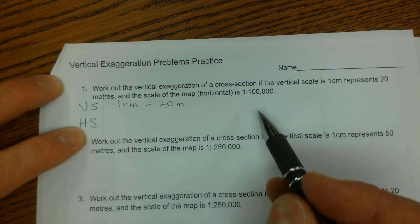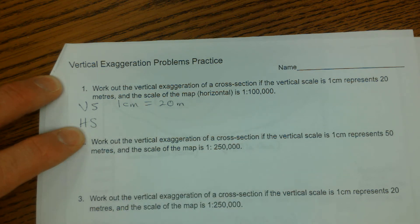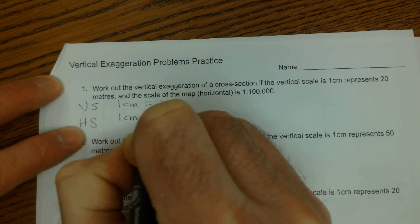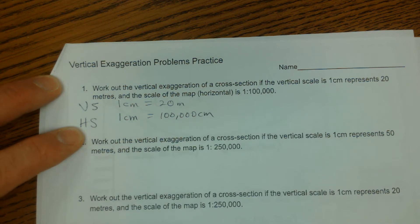And when I do these problems, what I need to happen is I need the first part of the measurement to be the same. So I'm going to choose to make this 1 to 100,000 a 1 centimeter equals 100,000 centimeter scale.